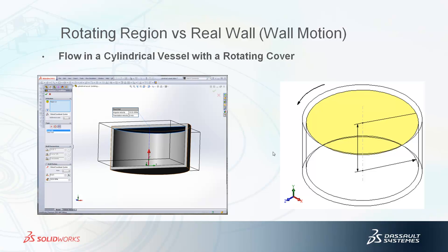This example shows when the real wall option should be used. Both on the left and the right, you see a surface — actually a disk that has some angular velocity applied to it. It's a flat surface, not a typical blade like an impeller or fan blade. In this case, you would want to use the real wall option. In the Flow Simulation Feature Manager tree, you can select the real wall icon, and when you select real wall, you'll have an option for wall motion where you can enter an angular velocity for that surface.